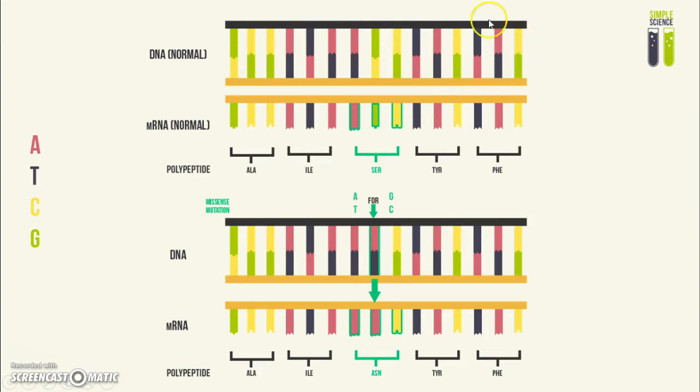This is the sense strand, which resembles the mRNA strand. In the normal DNA molecule for this specific gene, there is the base G on the sense strand, and therefore there will be the base G on the mRNA molecule. This codon will be coding for the amino acid serine.